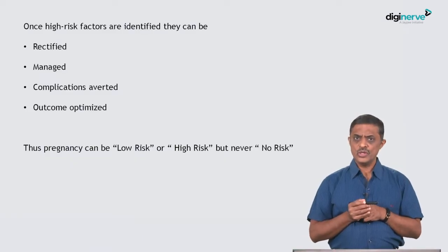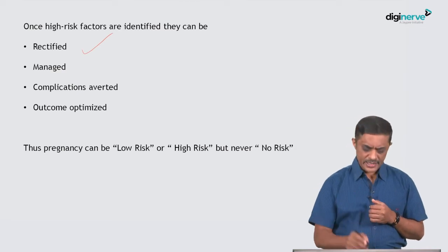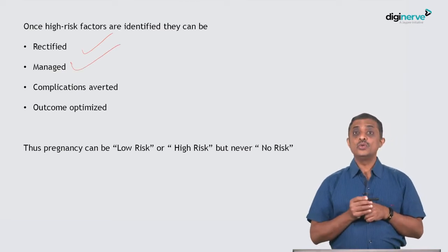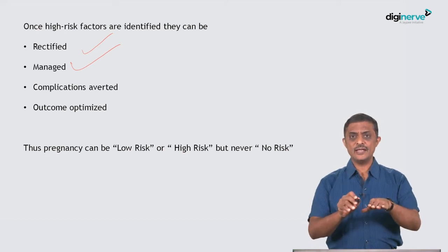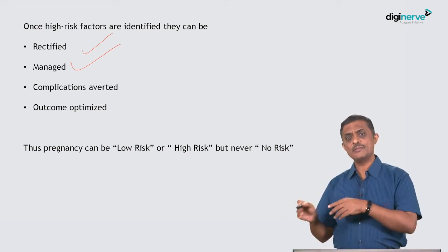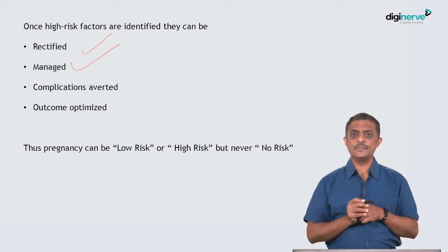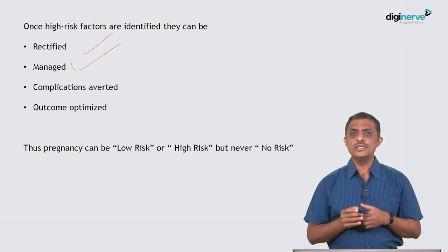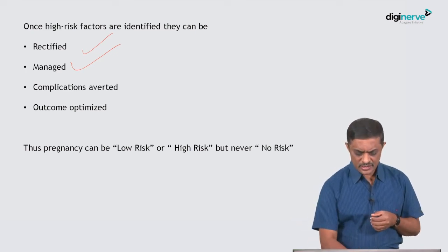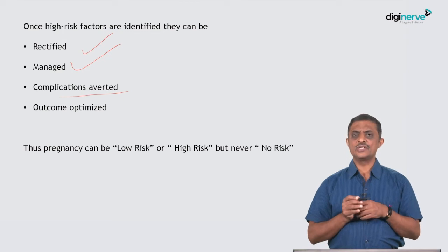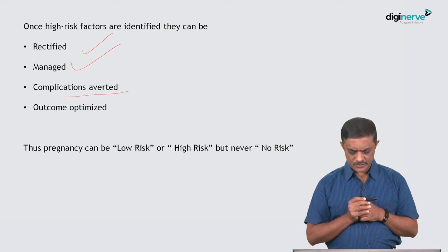Once high-risk factors are picked up, what can you do? You can try to rectify the situation, manage it, and avert the complications. The risk factor can lead to some grave complication. For example, if you identify hypertension and don't manage it properly, she can end up with eclampsia. So you can definitely avert the complication.